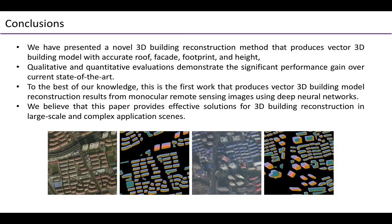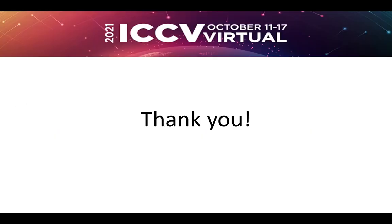In conclusion, we have presented a novel 3D building reconstruction method that produces a vector 3D model with accurate roof, facade, footprint, and height, achieving significant performance gain over current state-of-the-art. To the best of our knowledge, this is the first work that produces vector 3D building model reconstruction results from monocular remote sensing images using deep neural networks. We believe this paper provides effective solutions for 3D building reconstruction in large-scale and complex application scenes. Thanks for your listening.